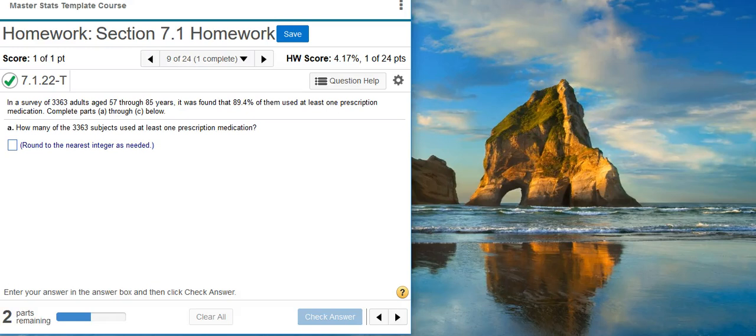Howdy, I'm Professor Curtis of Aspire Mountain Academy. Here with more statistics homework help. Today we're going to learn how to find a sample proportion and the corresponding confidence interval. Here's our problem statement: In a survey of 3,363 adults aged 57 through 85 years, it was found that 89.4% of them used at least one prescription medication. Complete parts A through C below.